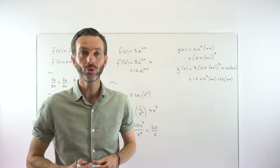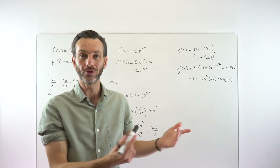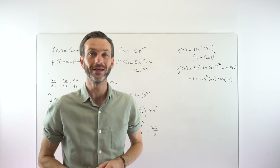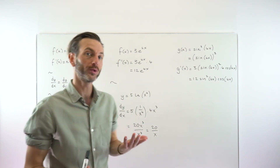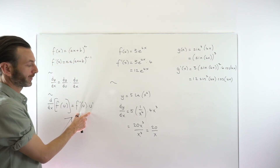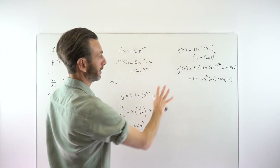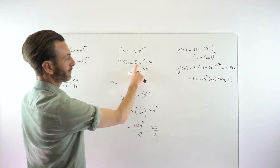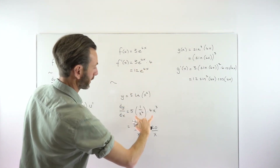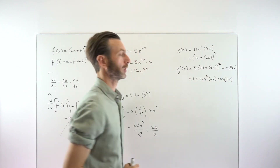If the chain rule is new to you, focus on the fundamental examples we looked at earlier — they're probably the ones you'll see most often. Note that the chain rule is applicable directly to a bunch of functions, and all we're ever doing is multiplying two derivatives together. That is what all these examples have in common.